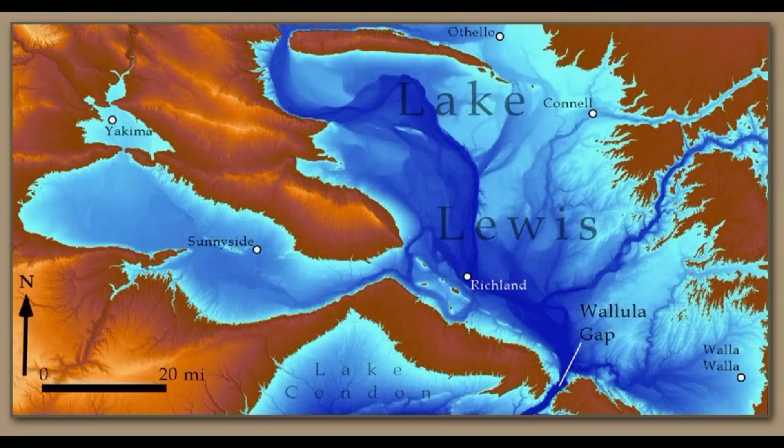Once the water level in the main trunk valley begins to drop, the water in the tributary valleys reverses and drains back out, leaving sediment behind. The sediment load depends on how fast the water is moving - if it's moving fast it can pick up and entrain a lot of fine-grained sediment, and as the water slows that material begins to settle out. This location is very close to where that reversal occurred, so you're getting a low-energy depositional environment here.